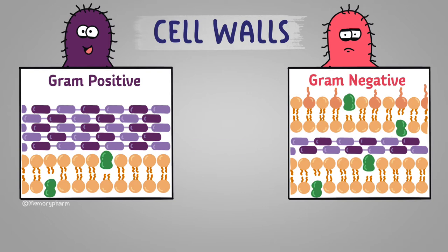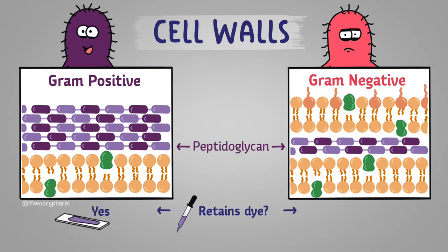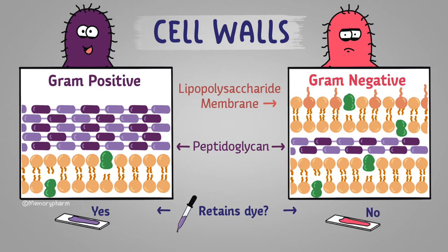Gram-positive organisms have a thick peptidoglycan layer that retains crystal violet stain, making them purple after gram staining. Gram-negative organisms have two distinct layers: a lipopolysaccharide membrane, or LPS, that surrounds a thin layer of peptidoglycan. The LPS membrane does not retain crystal violet stain. Therefore, they are stained later in the process by a pink counter stain called safranin, making gram-negative organisms pink after gram staining.